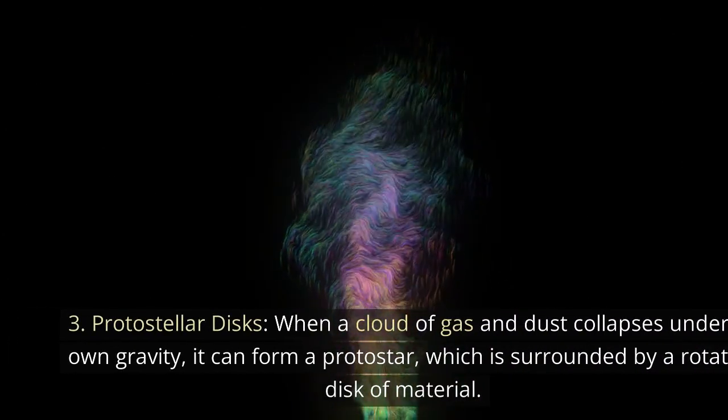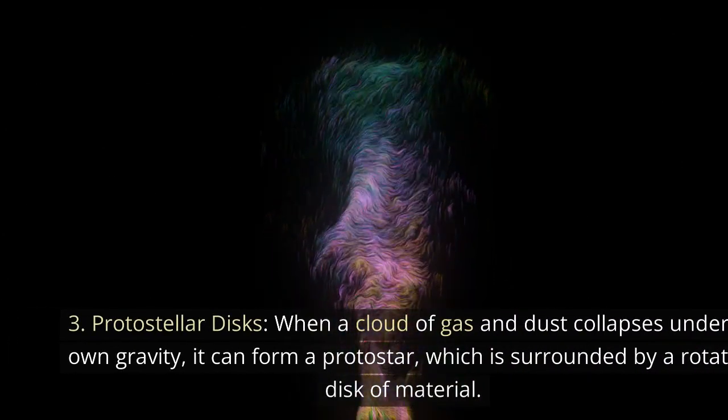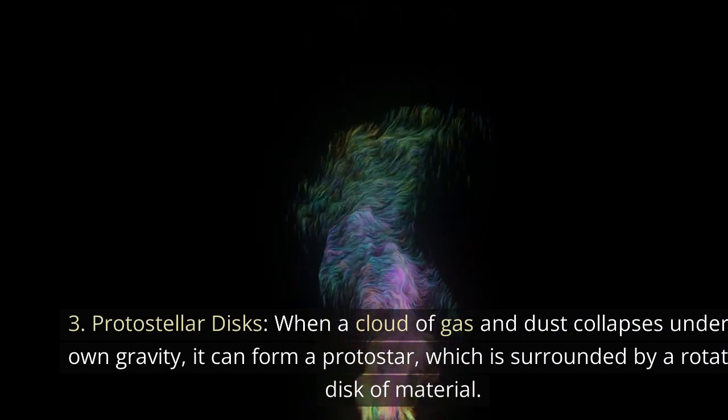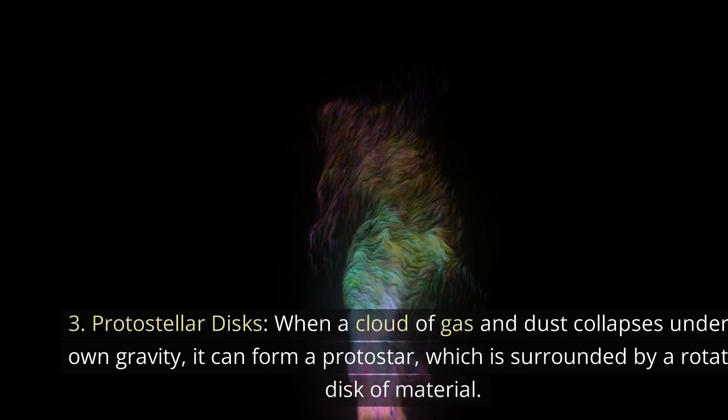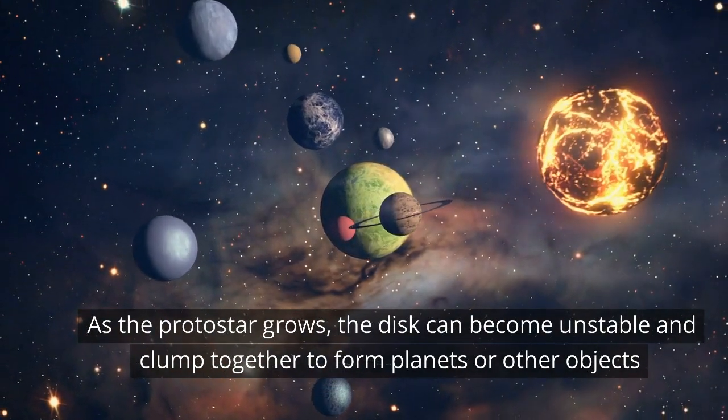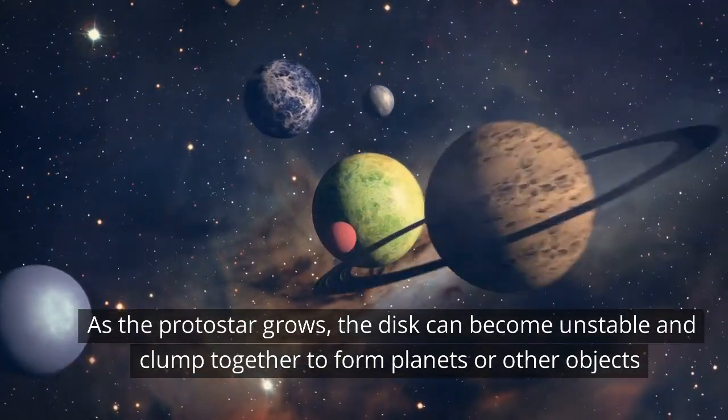3. Protostellar Discs - When a cloud of gas and dust collapses under its own gravity, it can form a protostar, which is surrounded by a rotating disk of material. As the protostar grows, the disk can become unstable and clump together to form planets or other objects.